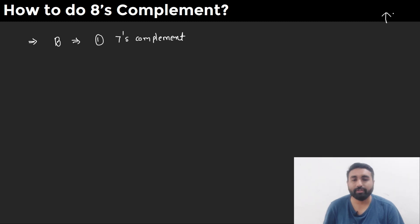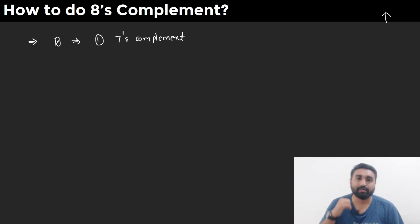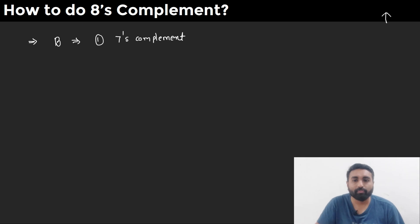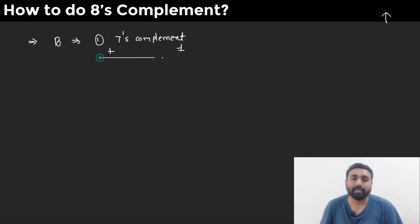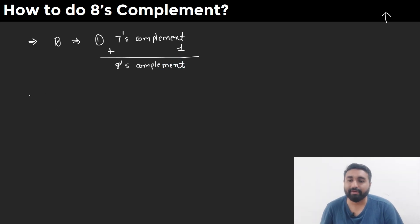How to find the 7's complement — that was covered in the last video, which you can find in the iCard. You can go there, check it out, and come back. Now, after finding the 7's complement, you need to add 1 to the answer, and that will be your 8's complement.